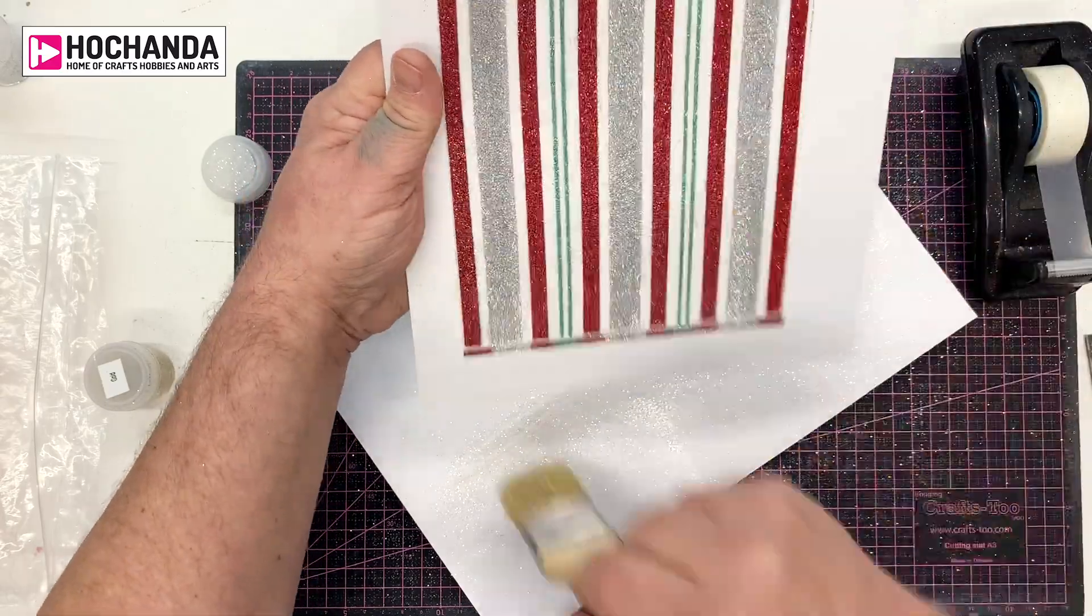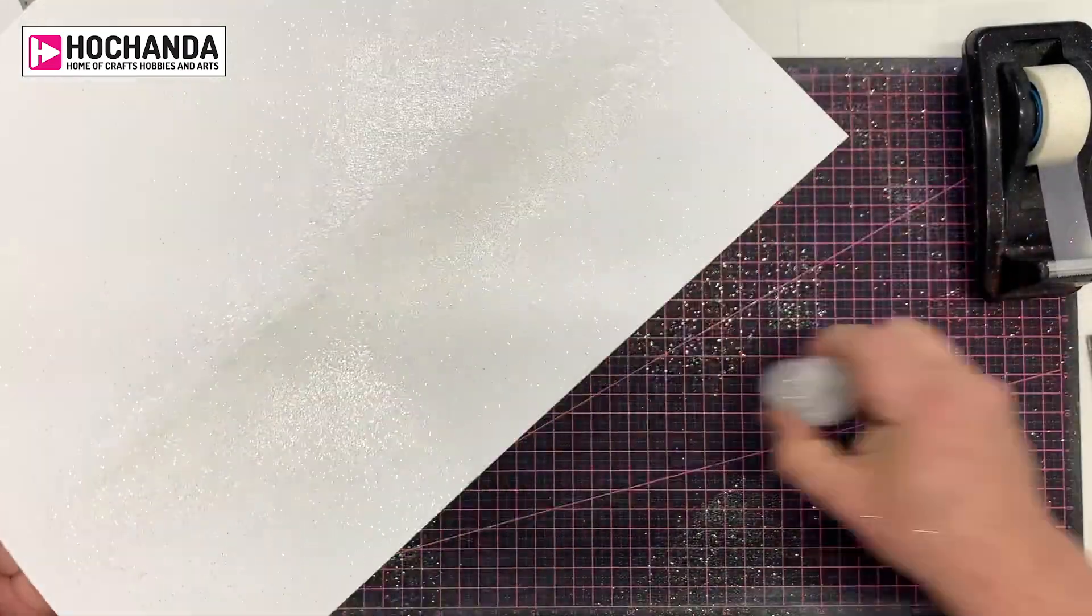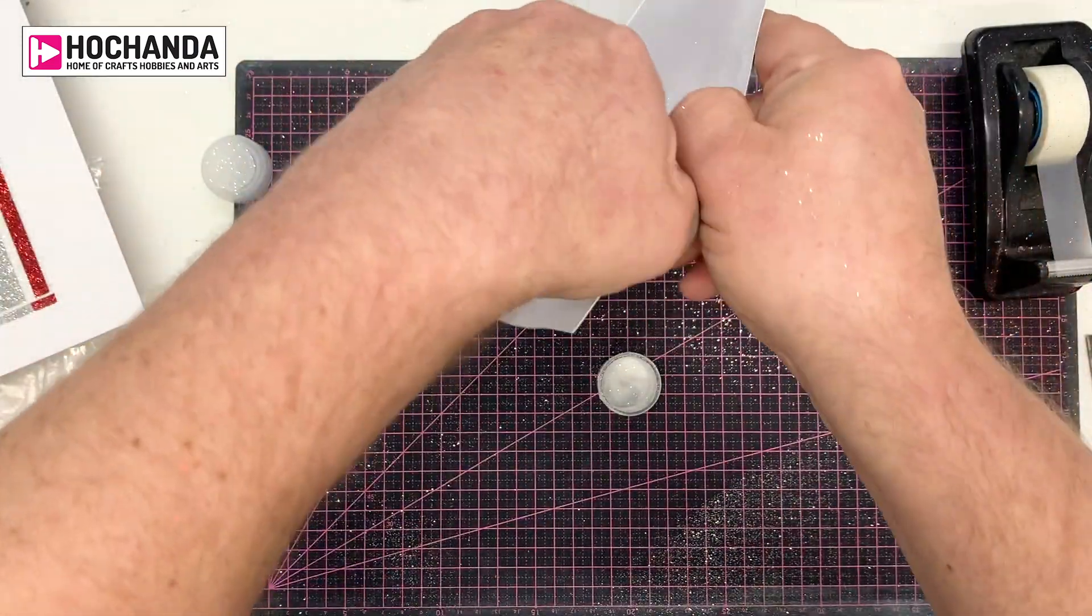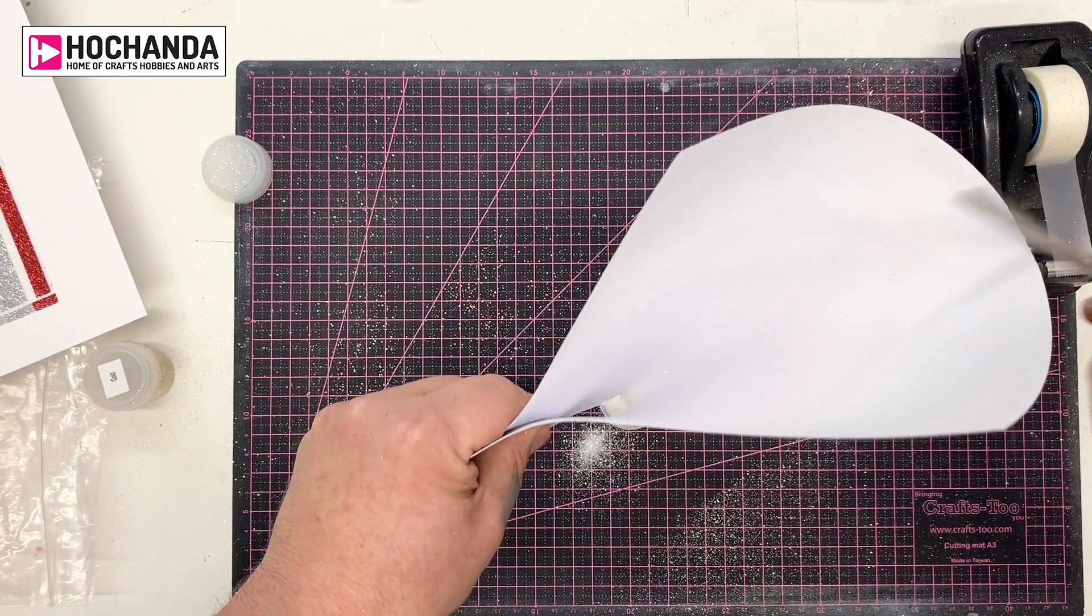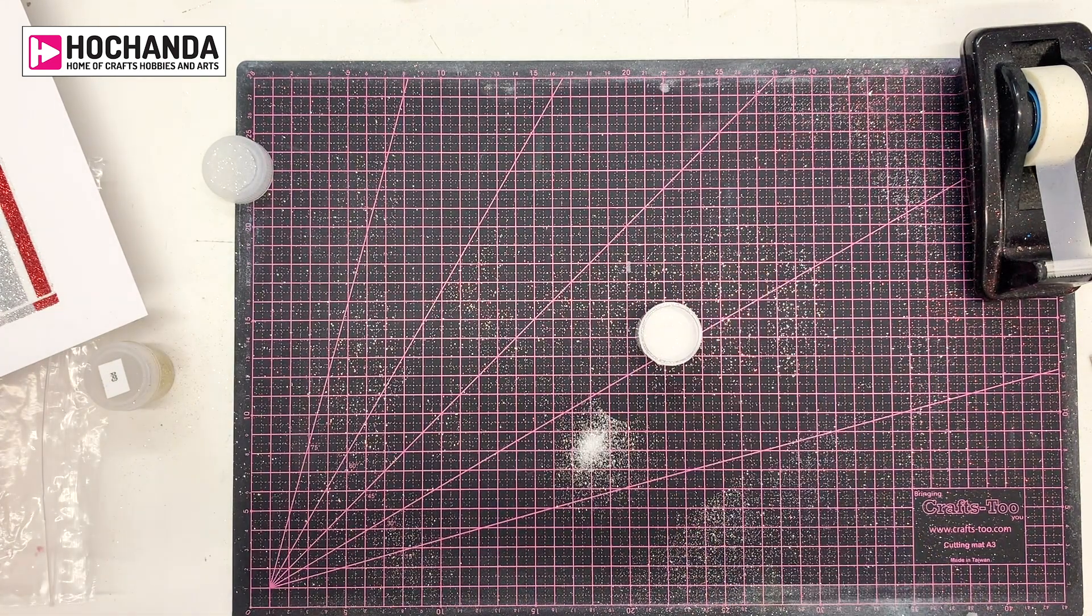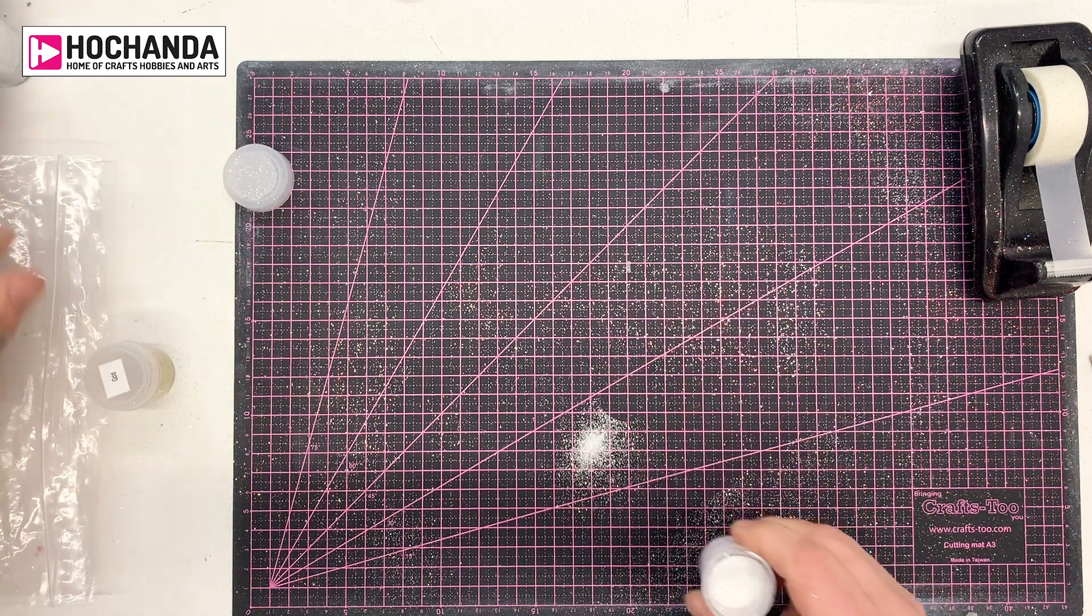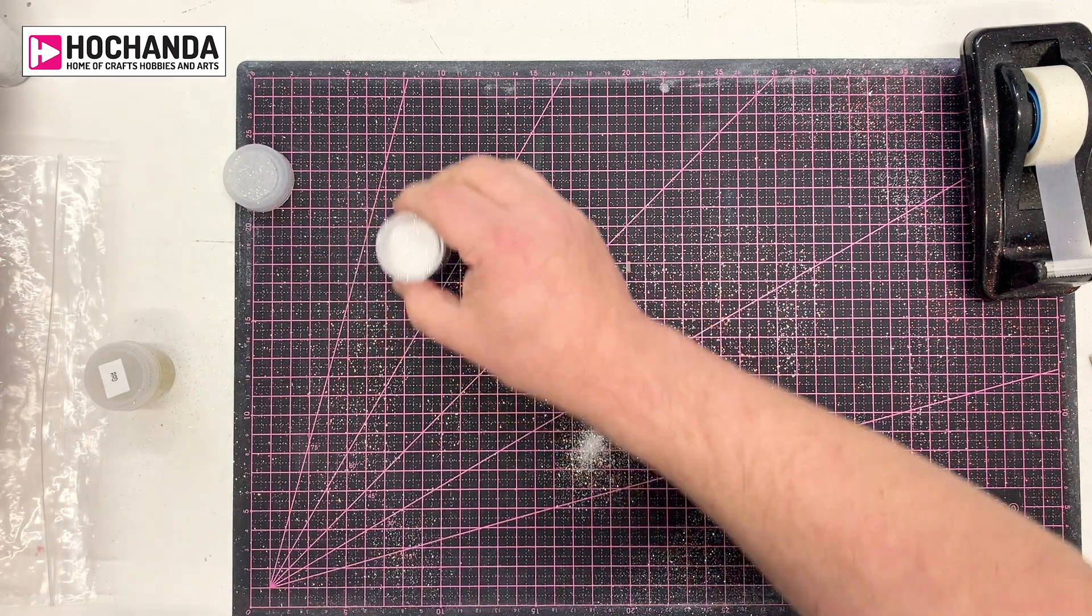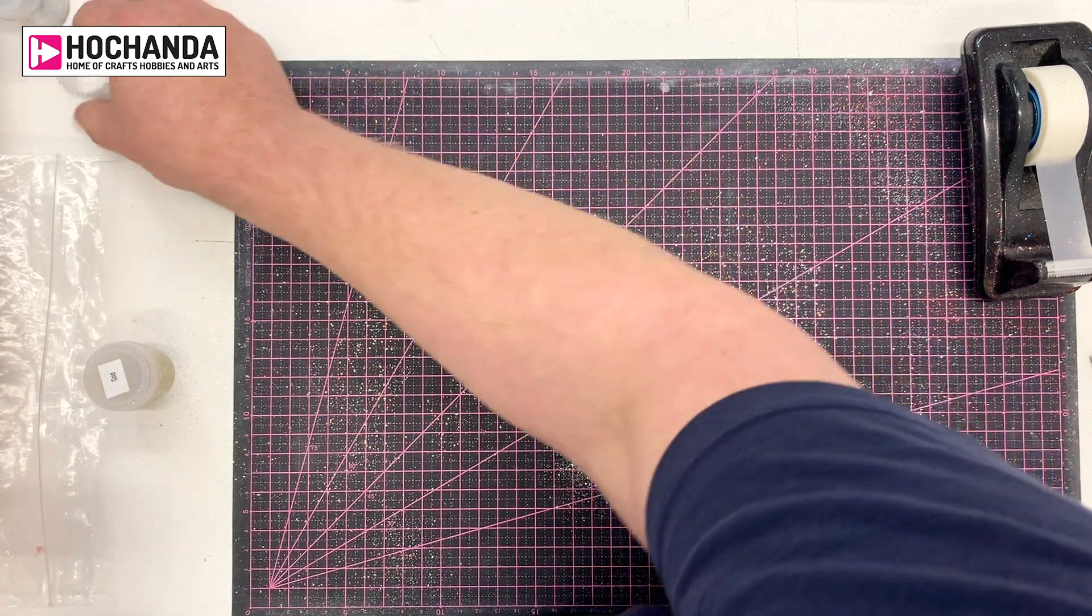So what we've then got is our panel. So again, I would take the glitter that's left and pull that back into the pot. Can you see how much is left? I've hardly used any. You do feel like you've used a lot more than you have. So we're just going to pop those away. And again, I'll pop my lid back on.